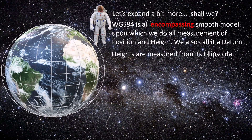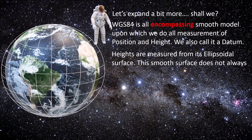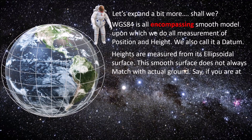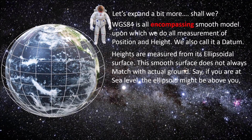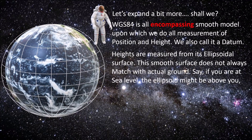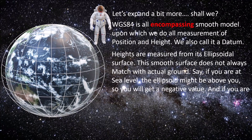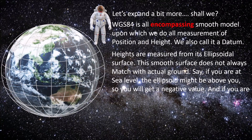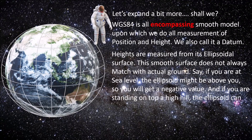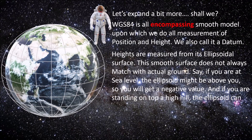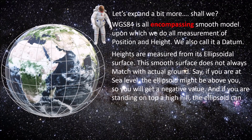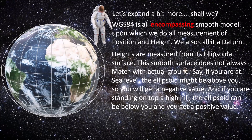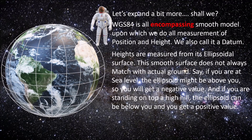Heights are measured from its ellipsoidal surface. This smooth surface does not always match with actual ground. For example, if you are at sea level, the ellipsoid might be above you, so you will get a negative value. And if you are standing on top of a hill, the ellipsoid can be below you and you will get a positive value.